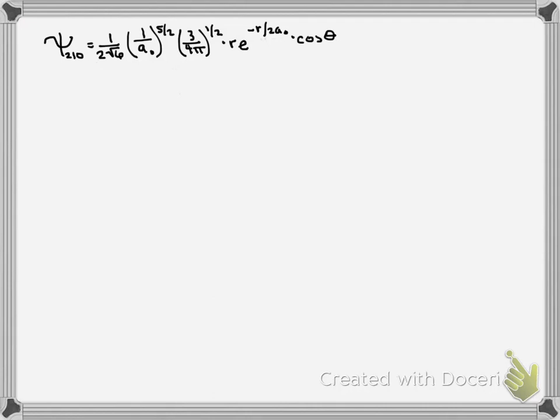And so for this wave function, I asked you to do a few things in between the first video and this video. One of those was to figure out what is the average distance of the electron from the nucleus, or what is the expectation value of r for the wave function ψ₂,₁,₀.